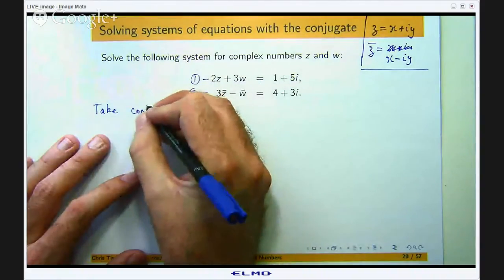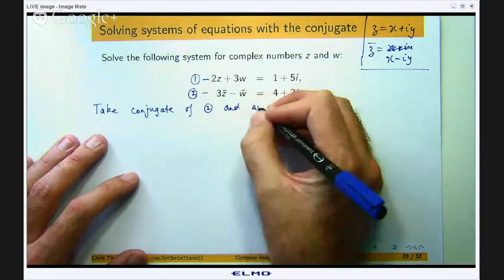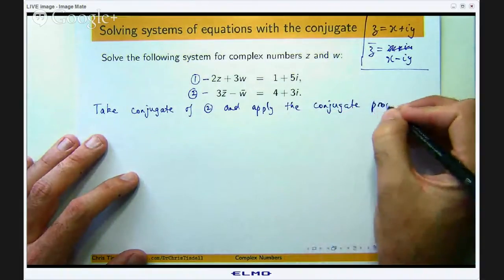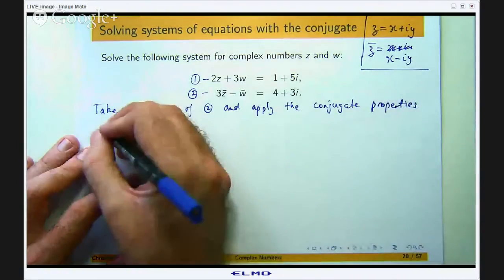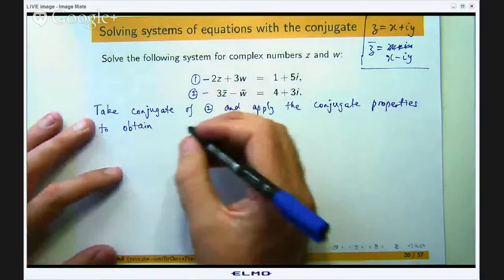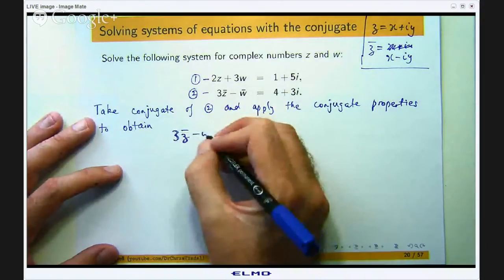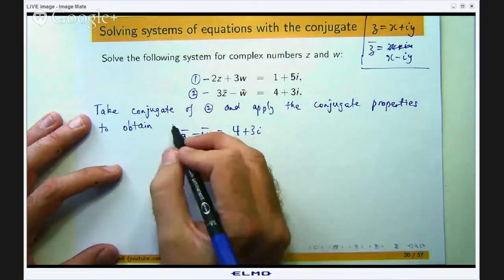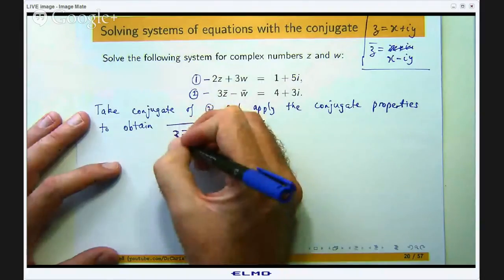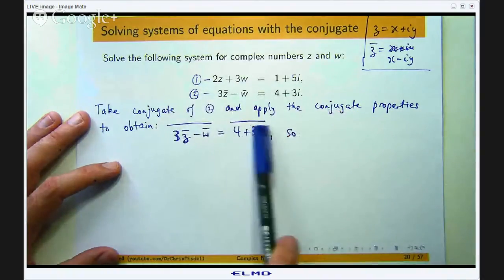Okay so take the conjugate of two, both sides of two. Apply the conjugate properties to obtain the following. Okay so let us take the conjugate of the left hand side and the conjugate of the right hand side. Okay so I am going to take the conjugate of the left hand side and the conjugate of the right hand side. Okay so I know from that little table I put up before, the conjugate of a difference is the difference of the conjugates.